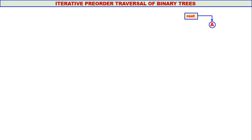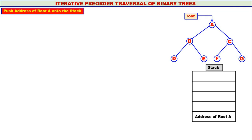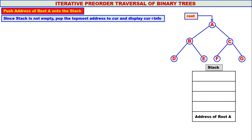Now we shall consider a slightly bigger tree. A is the root of the tree. The logic is the same. This is our stack. We push the address of root A onto the stack. Since the stack is not empty, we pop the address of root A to curr and display curr's info. A is displayed.